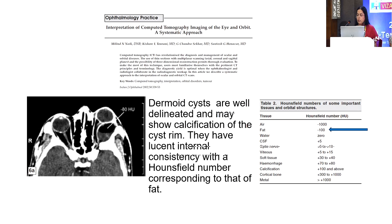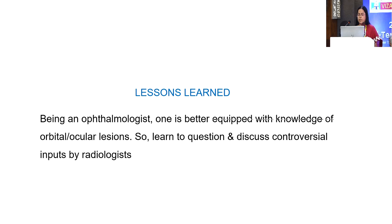To us it looked like a plain conjunctival cyst. We operated and histopathologically it was confirmed to be a conjunctival inclusion cyst. From the literature we know that a dermoid cyst has fat contents — fat has around minus 100 Hounsfield units and would be hypodense. So it clearly did not match our lesion. Lesson learned: as ophthalmologists, we are better equipped with knowledge of orbital and ocular lesions, so learn to question and discuss controversial inputs from radiologists.